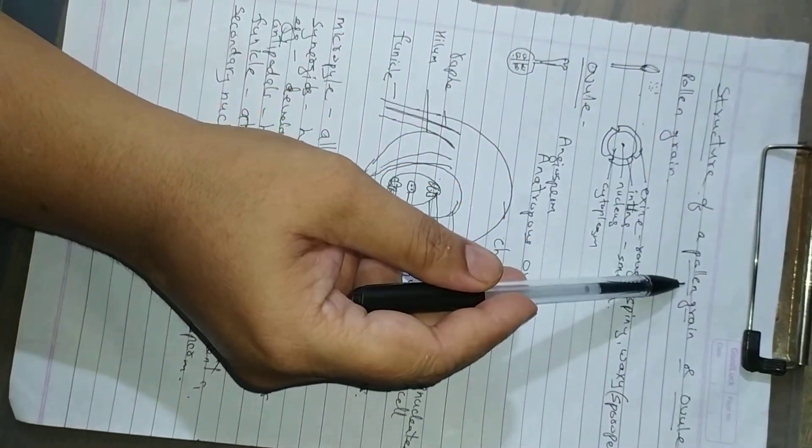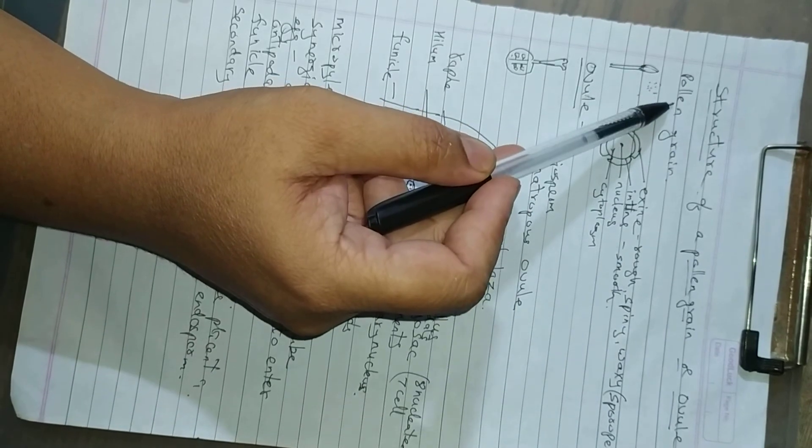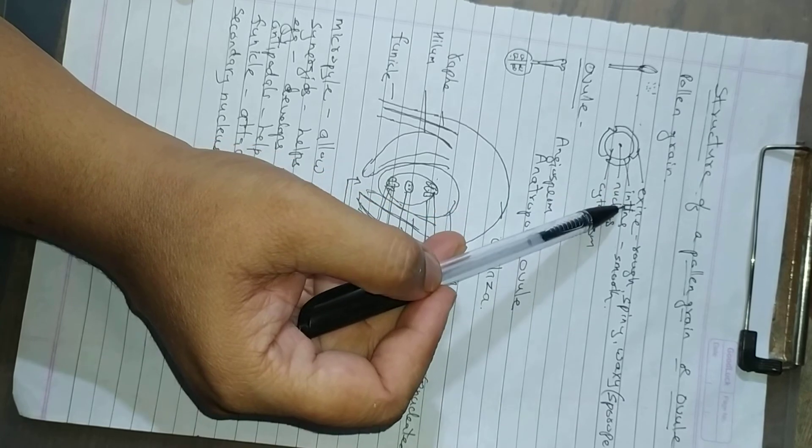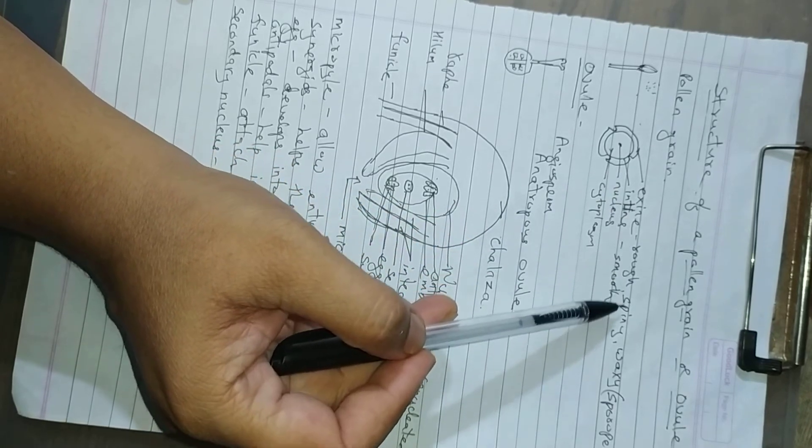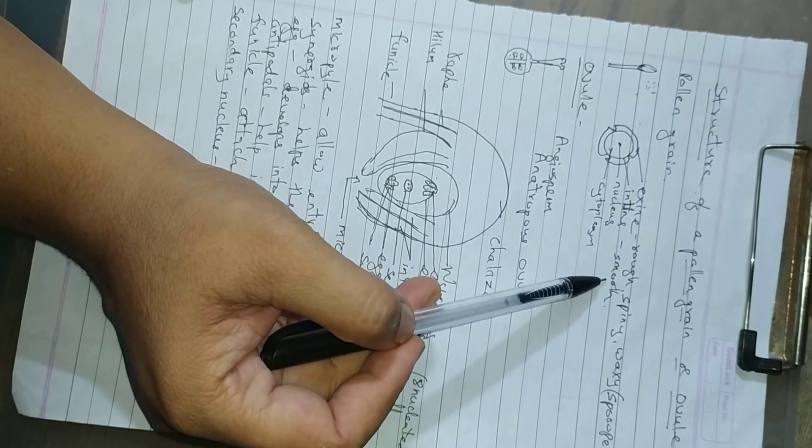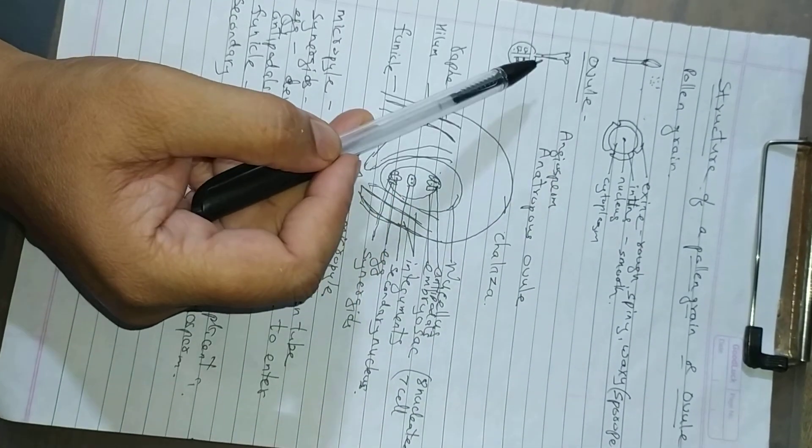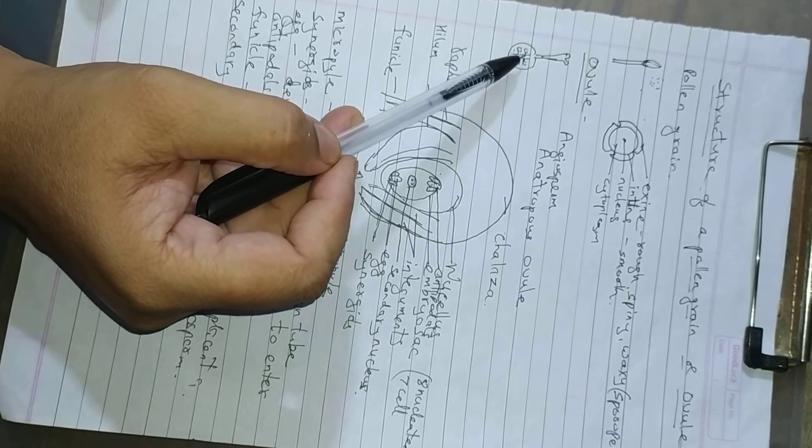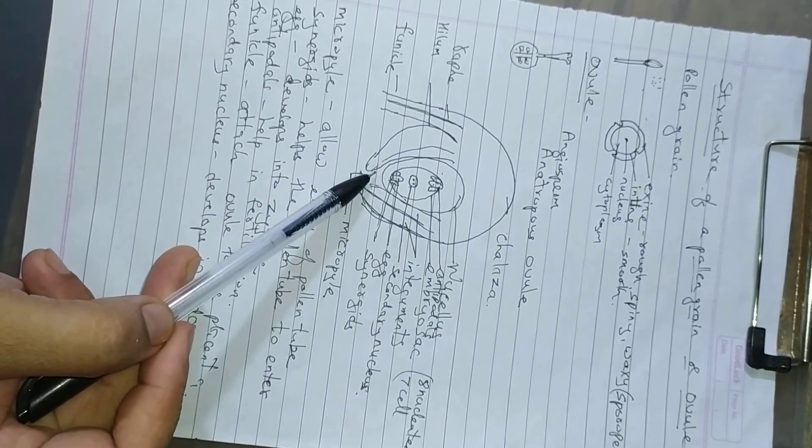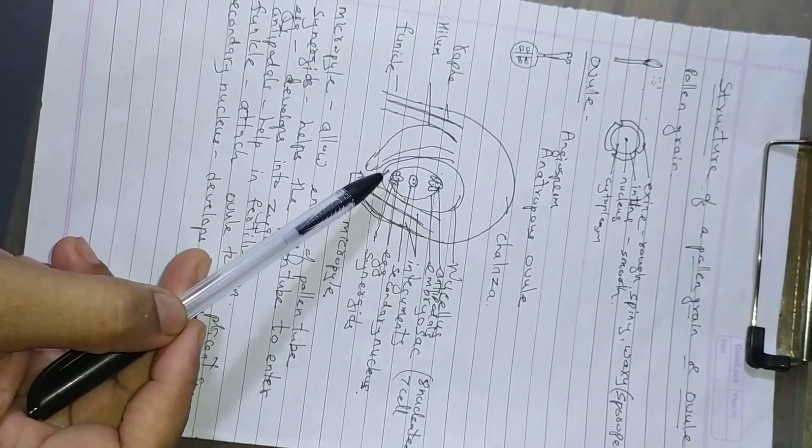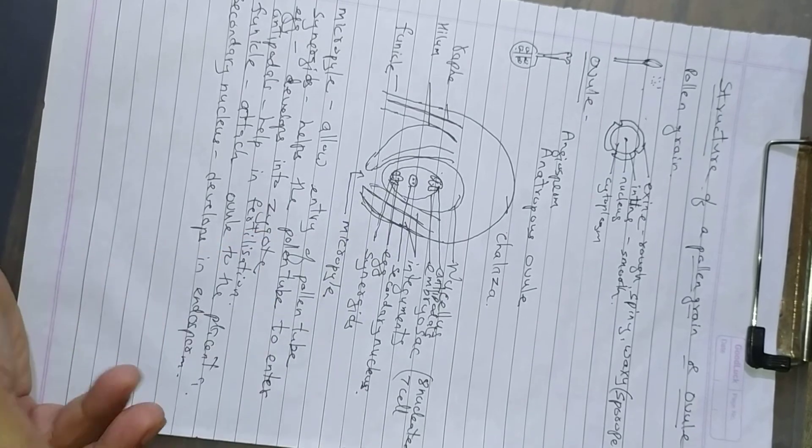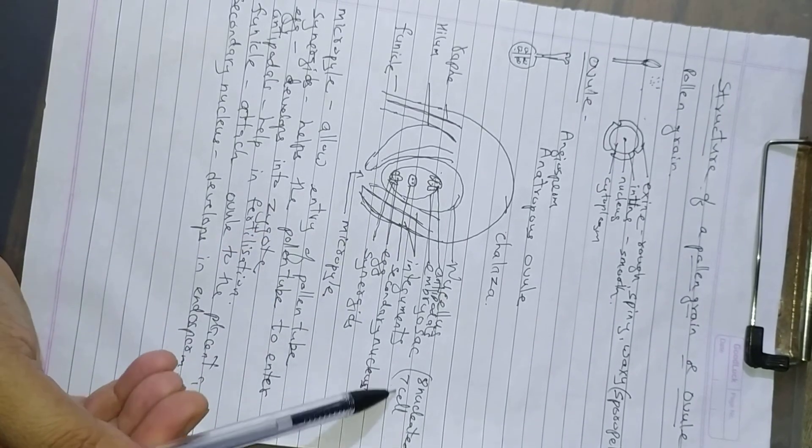We have studied the structure of the pollen grain and ovule. Pollen grain, yellowish powder. It is a double-layered structure. Outer exine, inner intine. Outer exine is rough, spiny or waxy. Intine is generally smooth. It is the male gamete. The female gamete is the ovule. In angiosperm, ovule is anatropous. We have seen this structure. This structure is inverted, it is anatropous. It contains the embryo sac, which is eight-nucleated, seven-cell structure.